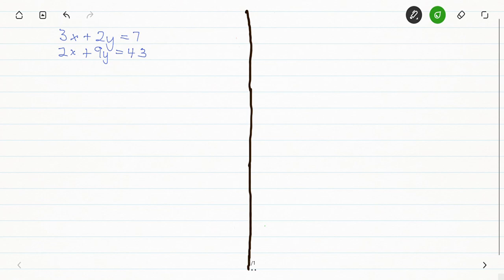Hello and welcome to subYGTV. Today we are looking at a question on simultaneous equations. The question is 3x plus 2y equals 7, and also 2x plus 9y equals 43.